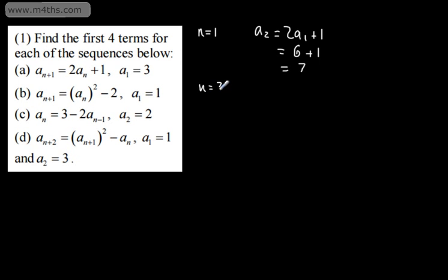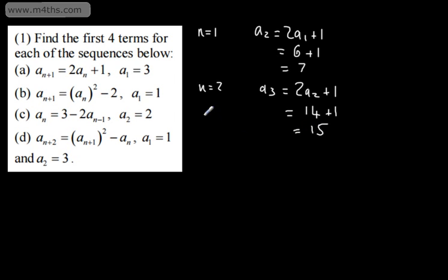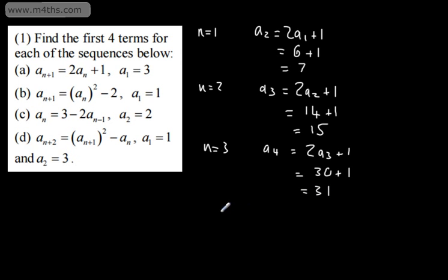When n is equal to 2, we have a3 equal to 2a2 plus 1, which is 2 lots of 7, giving 14, plus 1, which is 15. When n is equal to 3, a4 is equal to 2 lots of a3 plus 1, which is 15 times 2, giving 30, plus 1, which is 31. So the first four terms are 3, 7, 15, and 31.